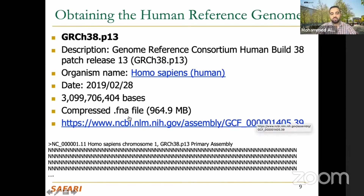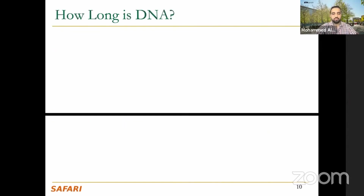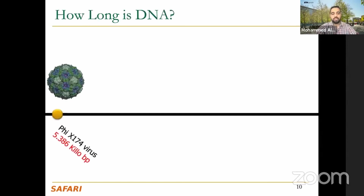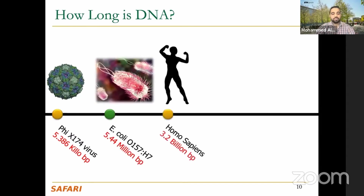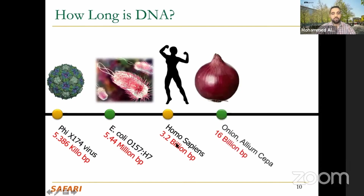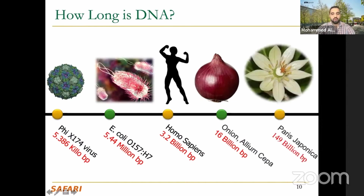DNA length varies widely by organism. For viruses it's a few thousands, for bacteria around a million, and for humans about 3.2 billion characters. Fruits and plants are well known for very long DNA — red onion DNA is 5x longer than ours, and a certain Japanese flower has DNA about 50x larger than humans, making it one of the largest in the world. The workloads for readmapping can be really huge or very small depending on what organism you're analyzing.